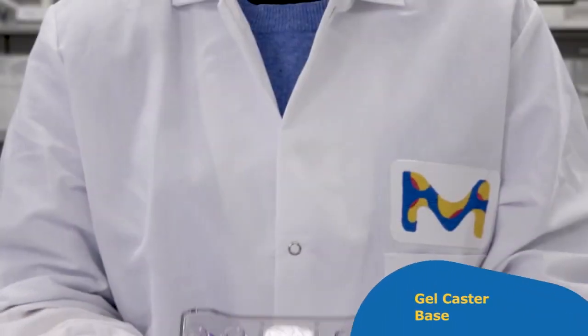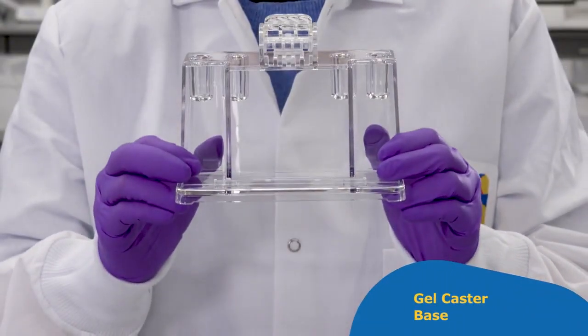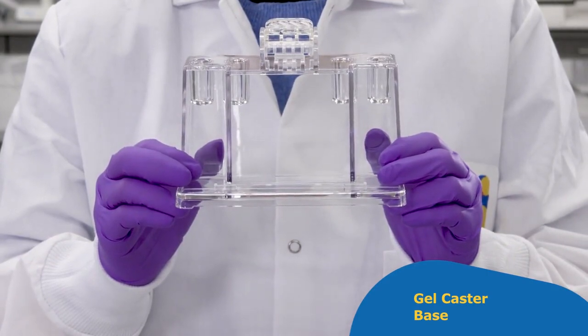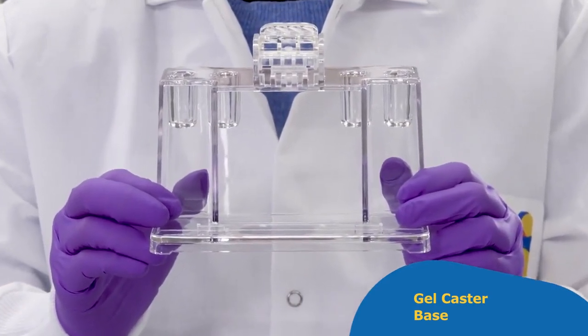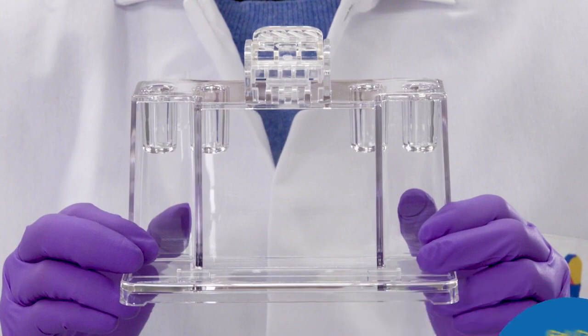The gelcaster base holds the gel casting frame. The tensioned lever at the top securely holds the gel cassette against the sealing gasket to prevent spills and leaks.